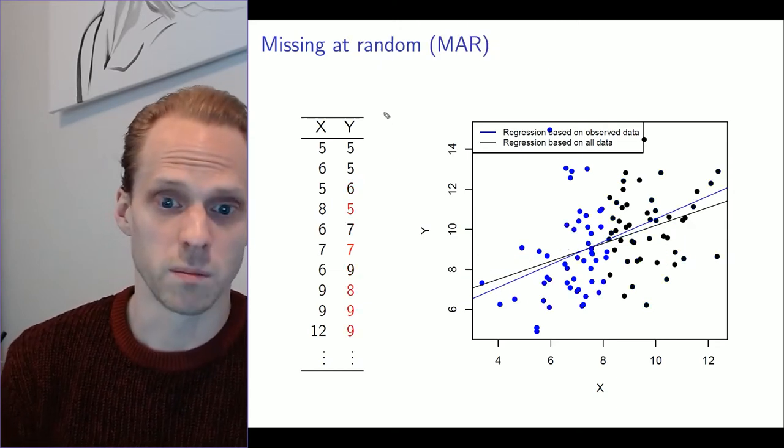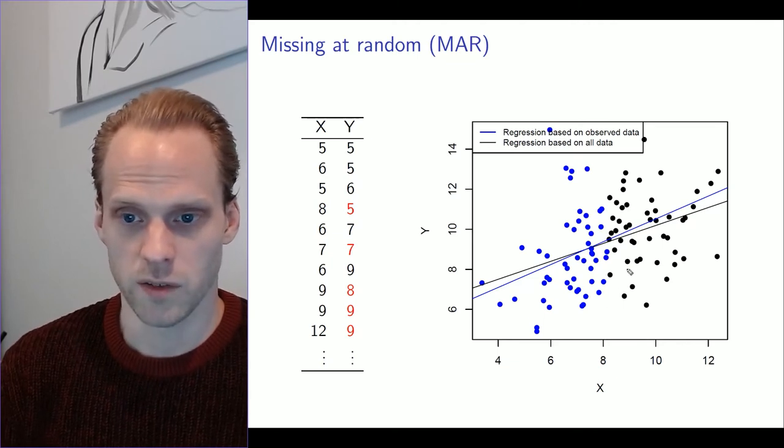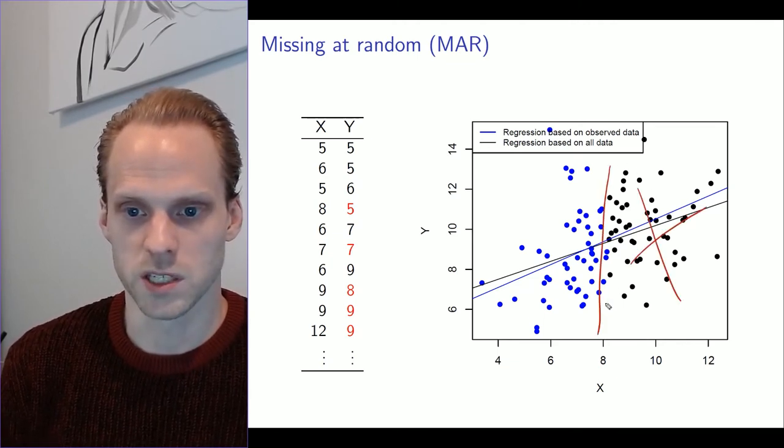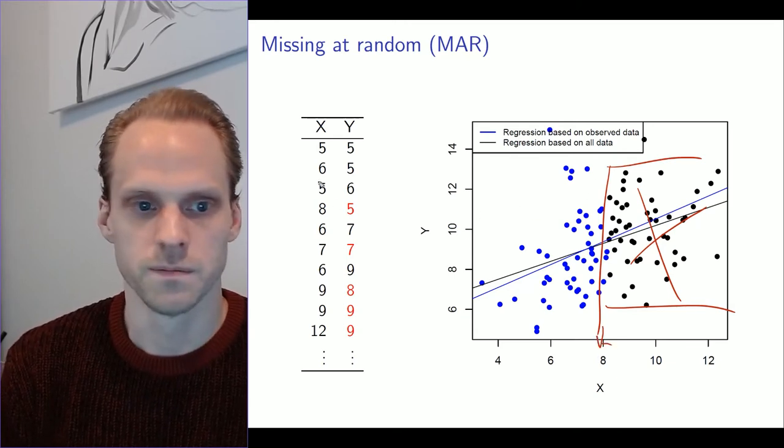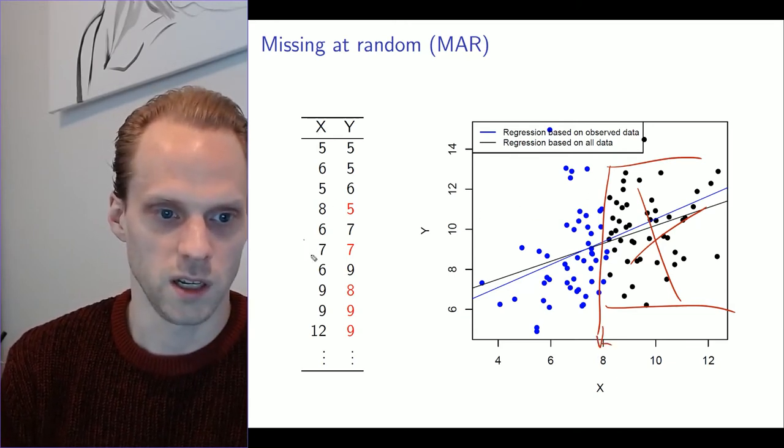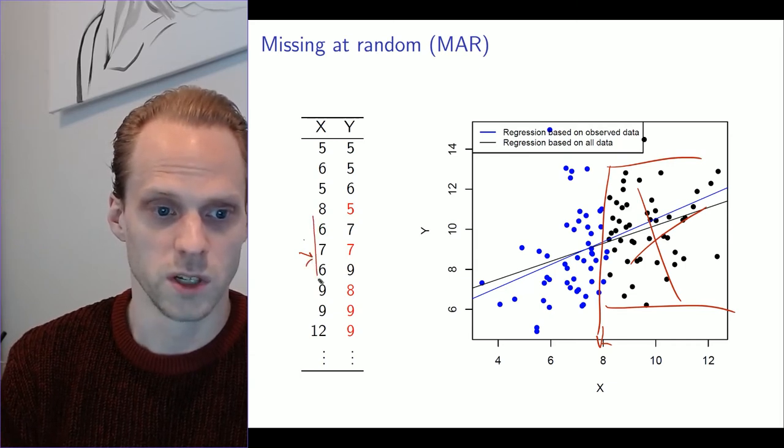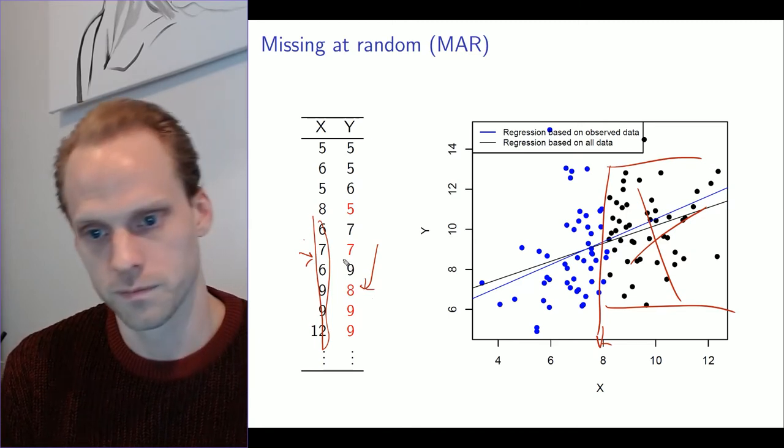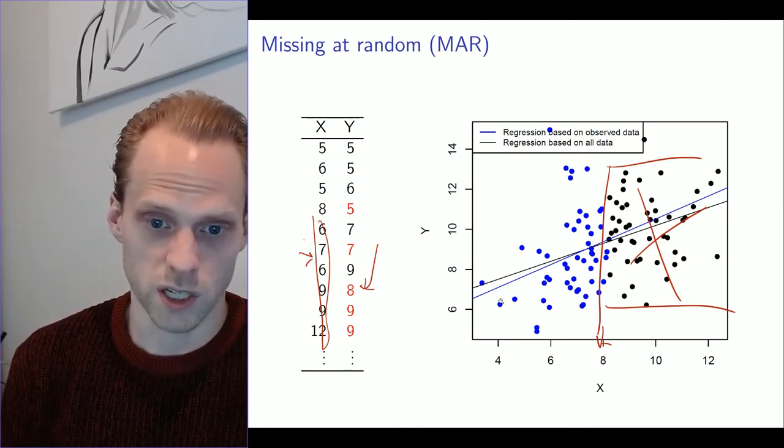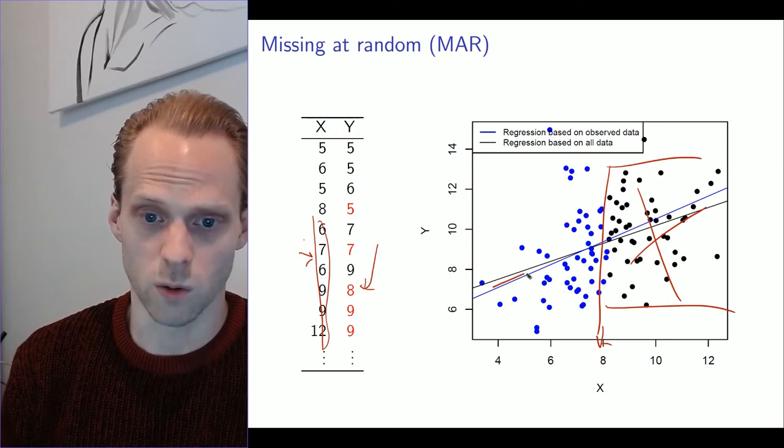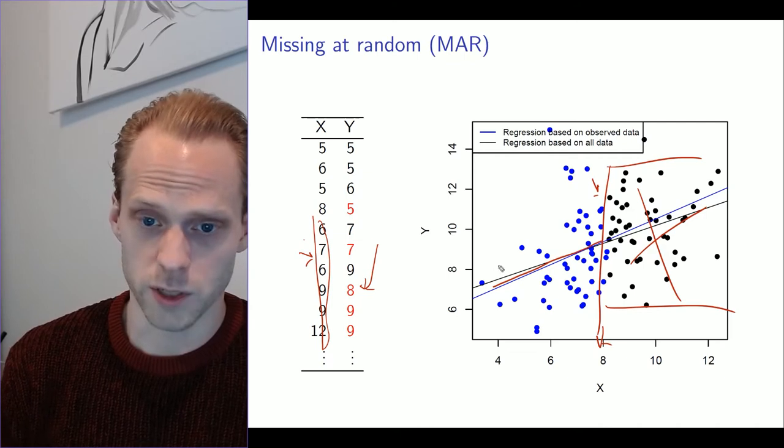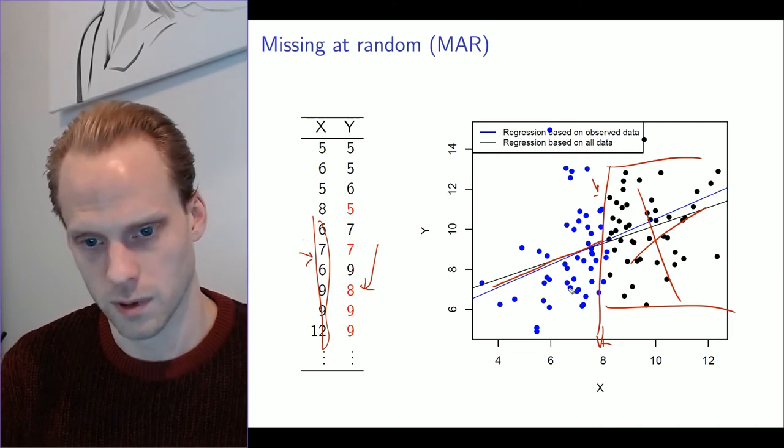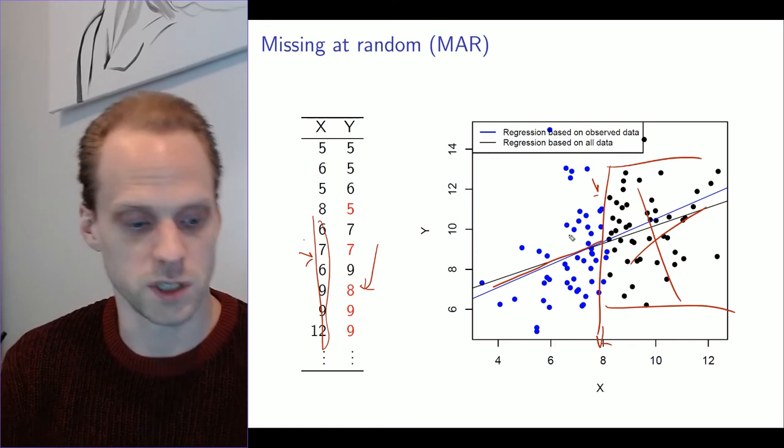Now I'm simulating MAR. What you see here is that everything above this part is missing, which is a function of X but not of Y. So Y is fine. Here's another example where the higher you get on X, the more you have missingness. What we see is that we would still get the same kind of regression slope, which is very similar still. We just cut off here, but the cloud doesn't really differ on the left side of this. The regression slope is very similar still, which is a good thing.